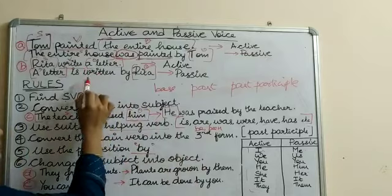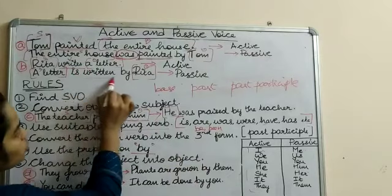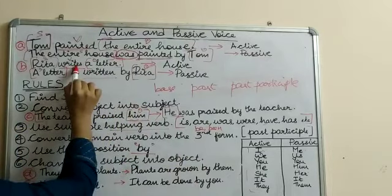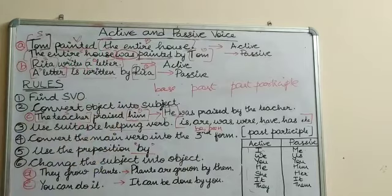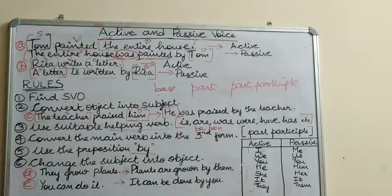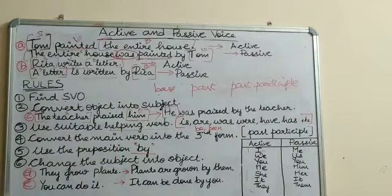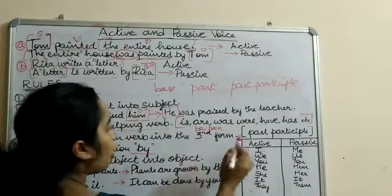When we change it into the passive, 'writes' changes to 'written.' We have write, wrote, written — written is the past participle form. Similarly, grow, grew, grown — grown is the past participle form. The verb should always be changed to the third form or past participle form.